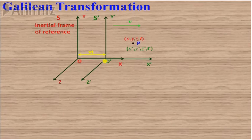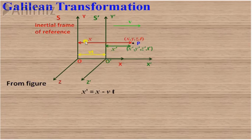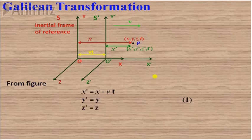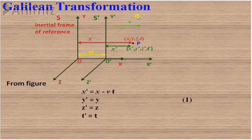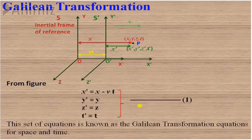From the figure, x' equals x minus vt. Since this frame is moving only along the x-axis, y and z coordinates remain the same — y' equals y and z' equals z. The velocity here is normal velocity, much less than the speed of light. Time is also the same in both frames: t equals t'. This transformation is for classical mechanics — these are called the Galilean transformation equations for space and time.